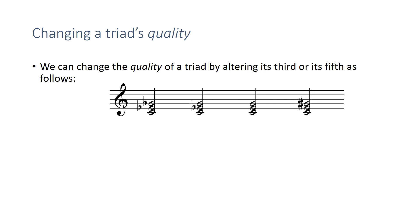Okay, so what we see here is a C diminished triad, a C minor triad, a C major triad, and a C augmented triad. So the first thing to remember is that if you lower the third of a major triad, then you get a minor triad. Also, if I had an F major triad and I lowered the third, it becomes a minor triad.